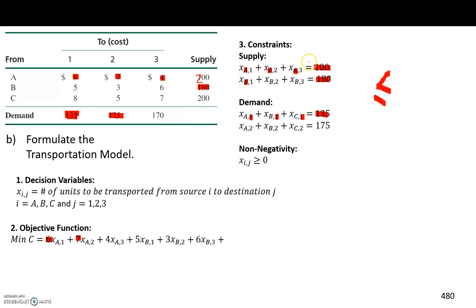So, for all of our supply constraints, we will have to put less than or equal to, less than or equal to, because we will not be using up all of our supply.